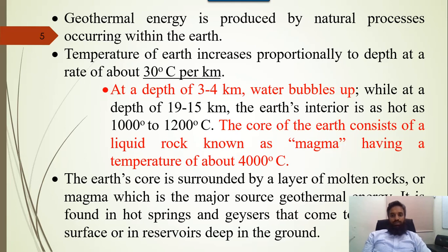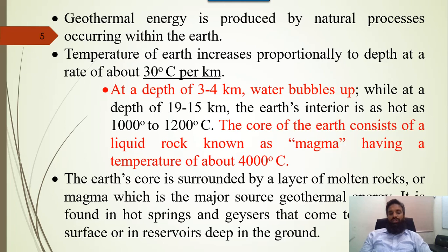Geothermal energy is produced by natural processes occurring within the earth. The temperature of the earth increases proportionally to the depth at the rate of 30 degrees per kilometer. At the depth of 3 to 4 kilometers, water bubbles up, while at the depth of 10 to 15 kilometers the temperature is approximately 1000 to 1200 degrees centigrade. The core of the earth consists of liquid rock called magma, with a temperature of approximately 4000 degrees centigrade. The earth's core is surrounded by a layer of molten rock or magma, which is the major source of geothermal energy.